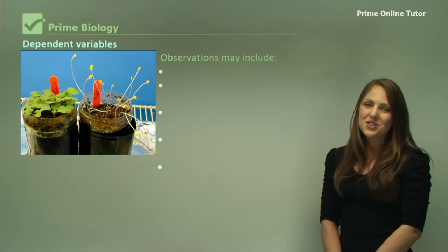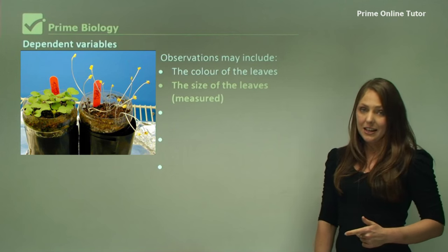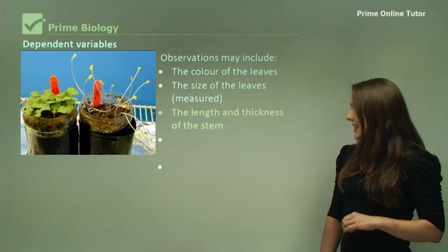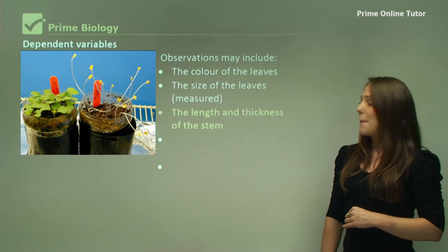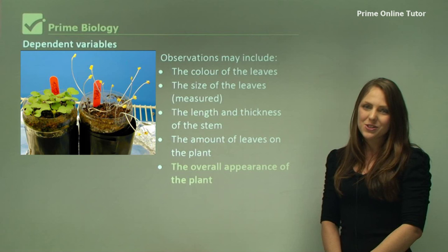So observations may include the colour of the leaves, the size of the leaves, the length and the thickness of the stem, the amount of leaves on the plant and the overall appearance of the plant.